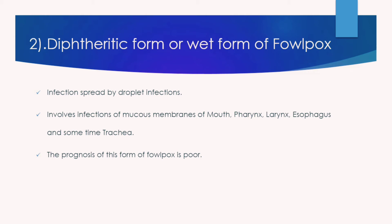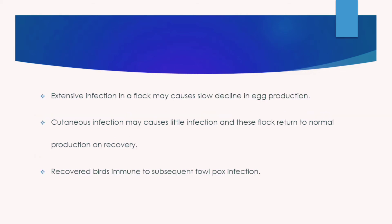The prognosis of the diphtheritic form of fowl pox is poor. Extensive infection in a flock may cause a slow decline in egg production. In the cutaneous form, if the flock recovers from fowl pox they return to normal production.